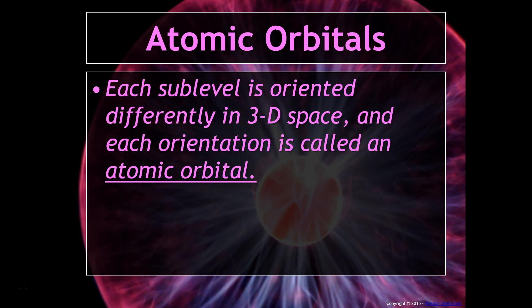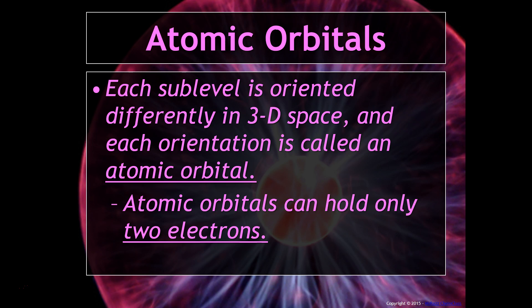Within each of these sublevels, you now have atomic orbitals. We know that atoms are three-dimensional, not two-dimensional. Sublevels take into account two dimensions, but we need a three-dimensional component. That's what an atomic orbital is. Each sublevel is oriented differently in three-dimensional space, and each orientation is called an atomic orbital. Atomic orbitals can hold only two electrons at most.